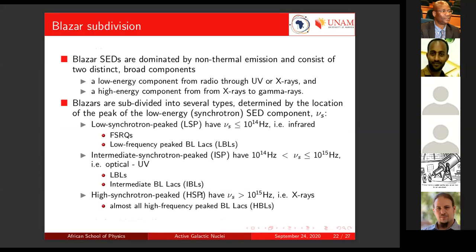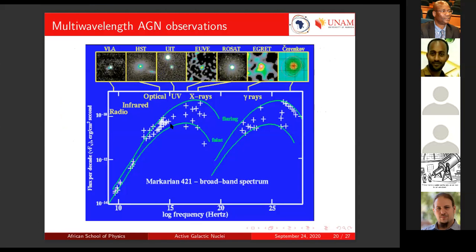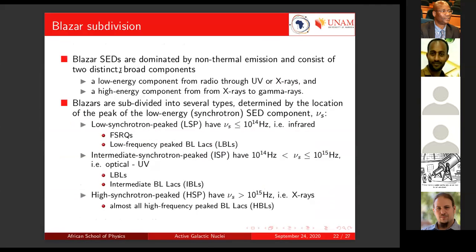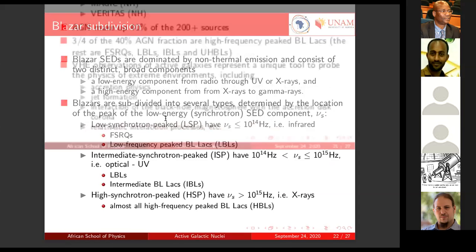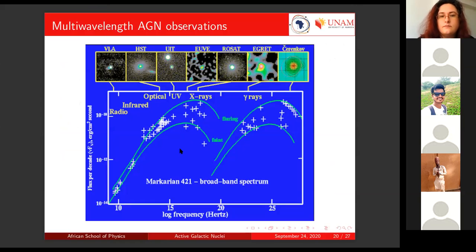Now, talking about what those IBLs and FSRQs are: the blazer spectral energy distribution, or SED, is basically a plot that encompasses the entire EM spectrum. Such a distribution for blazars is dominated by non-thermal emission — meaning temperature or heat is not a function of this type of emission. It consists of two distinct broad components: a low energy component ranging from radio through UV all the way up to X-rays, and a high energy component going from X-rays to gamma rays.